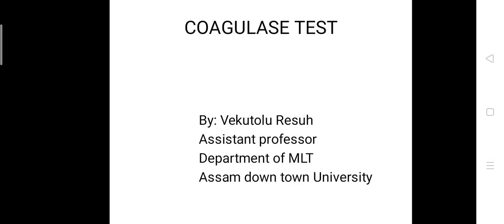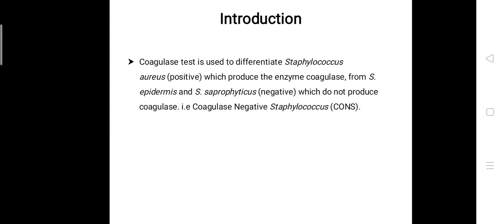Today we are going to be learning about coagulase test. Before we start with the procedure, let us see what is coagulase test. This coagulase test is used to differentiate Staphylococcus aureus, which produce the enzyme coagulase, from Staphylococcus epidermidis and Staphylococcus saprophyticus, which do not produce coagulase. That is coagulase negative Staphylococcus, in short we call it as CONS.